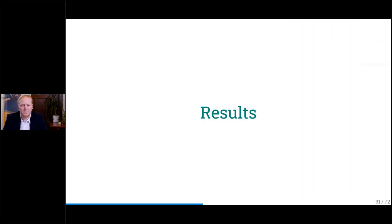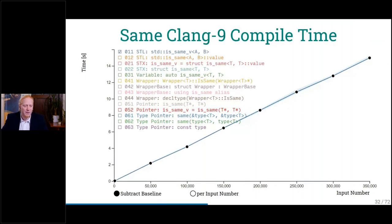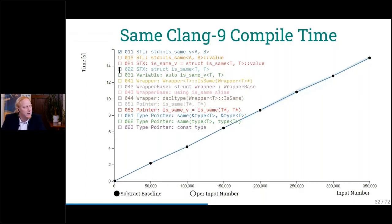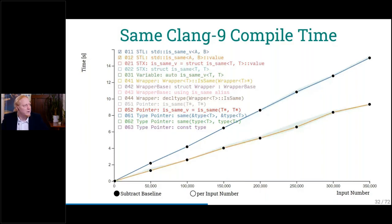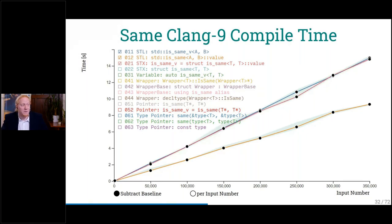Let's look at the results. We have interactive charts in my presentation. This is the compile time graph for Clang 9 — why Clang 9? Because Clang 10 was slower so I didn't upgrade. This is the baseline using the STL. Now the question is: is it faster to use the variable or to use the structure directly? It seems kind of a lot faster if we directly use the structure instead of the constexpr variable.